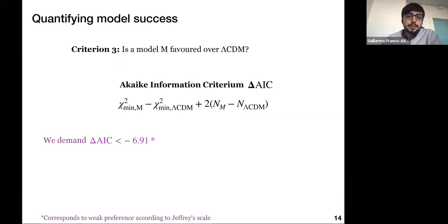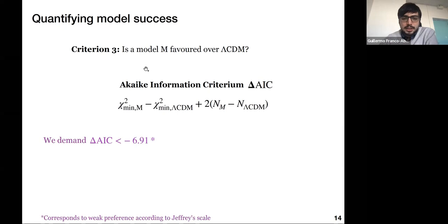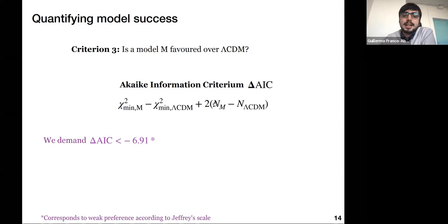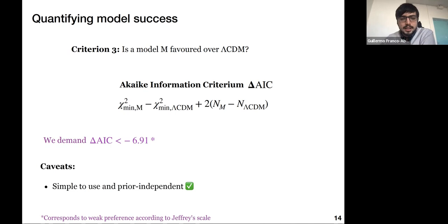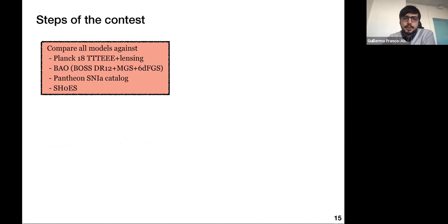This criterion is still not perfect because it doesn't account for overfitting — a model with an arbitrarily large number of parameters could fit anything. For this reason we use a third criterion: is a certain model M favored over Lambda CDM? For that we use the Akaike Information Criterion, comparing the minimum chi-square of the extended model M with the minimum chi-square of Lambda CDM, but adding a penalty factor accounting for the extra free parameters in model M. We demand a weak preference according to the Jeffreys scale. This method is simple to use and completely independent of prior edges, as opposed to Bayesian model comparison methods such as the Bayes factor.